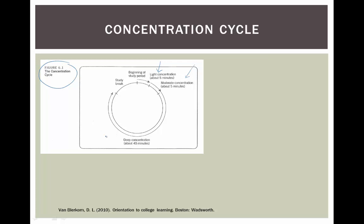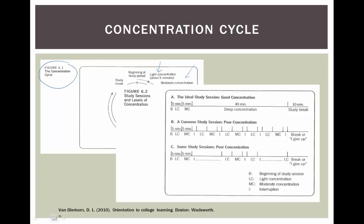Following those 40 minutes, you can take a break before beginning the process again. This second figure shows the difference between the ideal study session, which follows the concentration cycle, and more common study sessions, which often have more interruptions and lower levels of concentration. Finding the right space and setting for your study session may take a few trial periods, but once you find the environment that works for you, you'll be able to engage in your study sessions with less distractions and fewer interruptions.